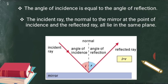The second statement says that the incident ray, the normal to the mirror at the point of incidence, and the reflected ray all lie in the same plane. These three lines — the incident ray, the reflected ray, and the normal — always lie in the same plane, meaning they are coplanar.